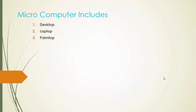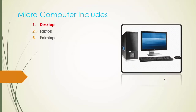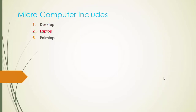Microcomputers include desktop, laptop, and palmtop computers. The desktop computer has a separate screen, CPU, keyboard, and speaker. The laptop computer also has a keyboard, mouse, speaker, and screen integrated together.